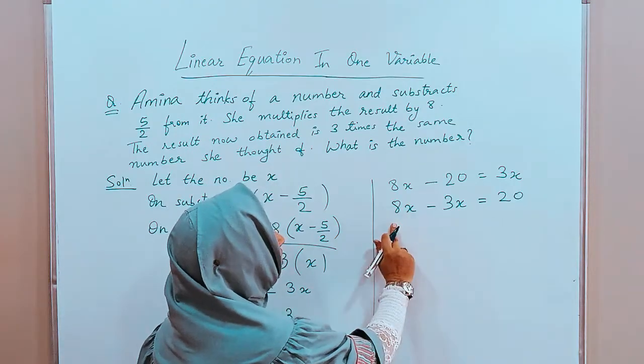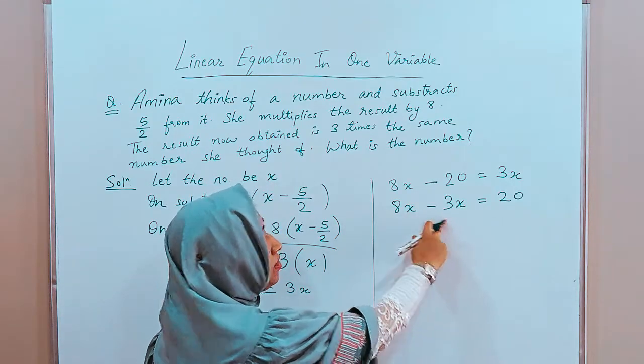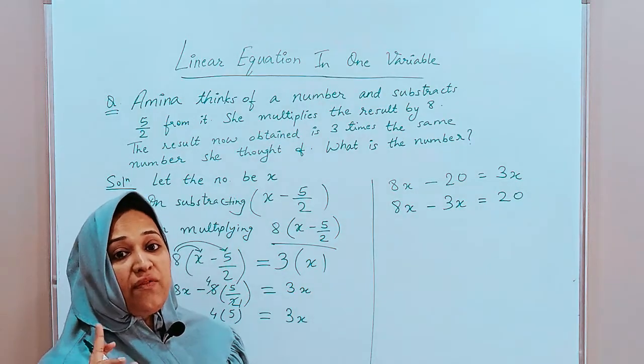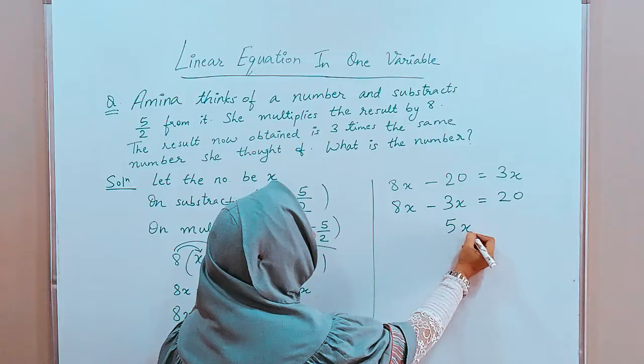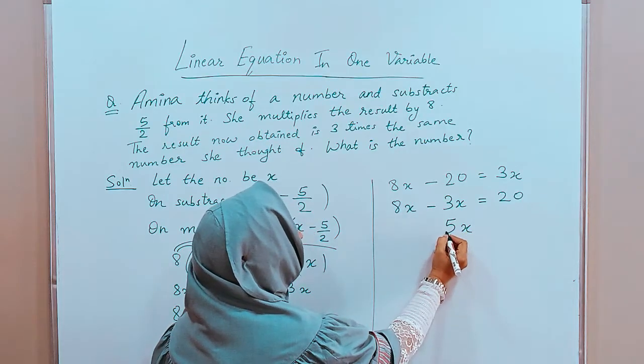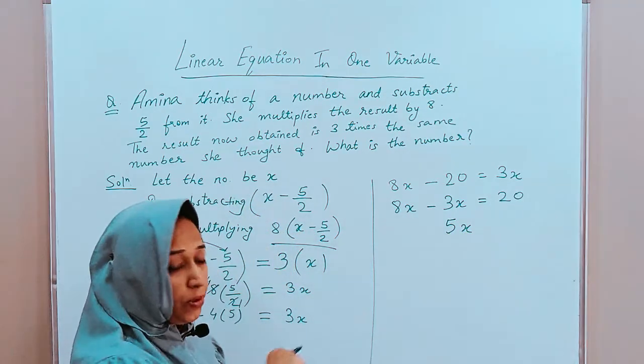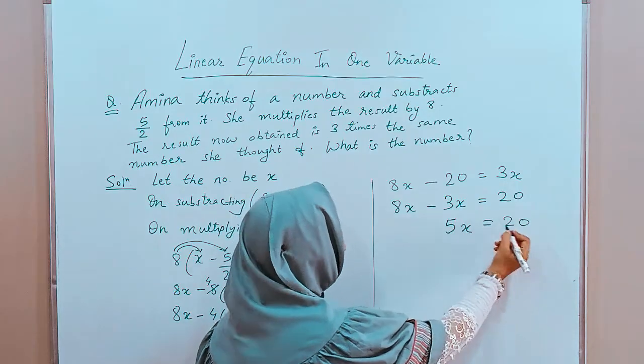Now, the signs here are different. Plus 8, minus 3, different signs means we have to subtract. 8 minus 3 is 5x. Sign of the greater number that is plus. So, we are not putting a plus there, is equal to 20.